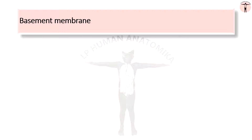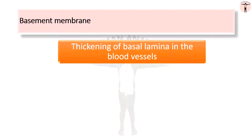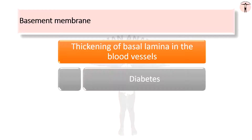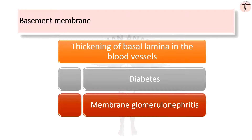The basement membrane may undergo marked change in some pathological conditions. The basement membrane thickens in the small blood vessels in individuals with diabetes and in individuals with glomerulonephritis. It also thickens in the glomerular capillaries of the kidney in individuals with glomerulonephritis.